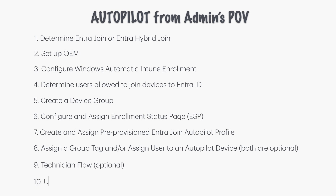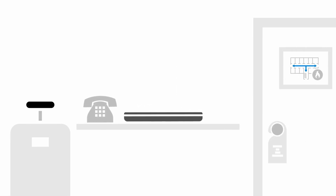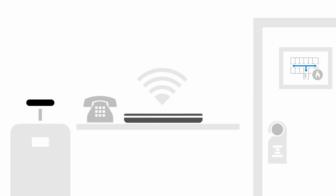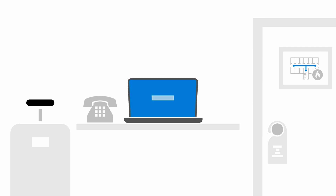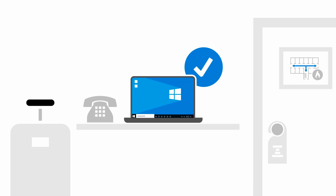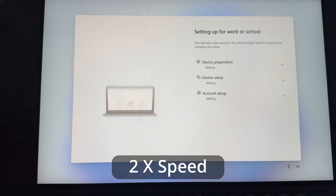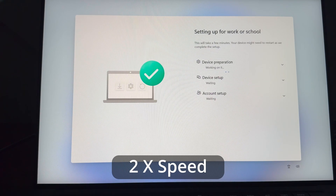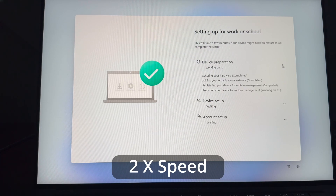Finally, the device is in the user's hands and they are ready to turn it on. If you've previously taken the steps of the technician flow, then the user would only need to turn on the computer, sign in, and go through the account setup. If you didn't pre-provision the computer before handing it or shipping it to the user, then the computer will go through the first two phases of the Enrollment Status Page — device preparation and device setup — and the user will also have to sit through the account setup, which will of course take longer.